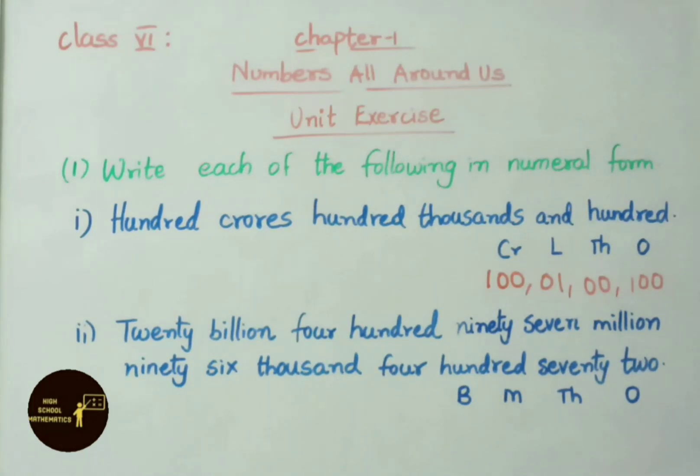See the second one: 20 billion, 497 million, 96 thousand, 472. Here billions they have given, so we mention the number in international numeral form. So we mention periods here: ones period, thousands period, millions and billions. Now read the number name.